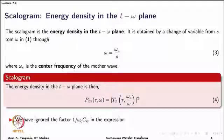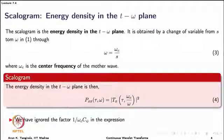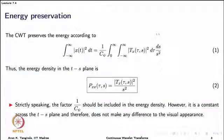To do this conversion we go back to our scale-to-frequency expression. We know the pseudo-frequency relation omega ≈ omega_c / s, where omega_c is the center of the passband frequency of the wavelet. You could replace omega_c with another reference frequency such as a peak frequency, but it is usually the center frequency. We then bring in this relation between omega and s back into equation 1 — not directly substituting into equation 2, but first rewriting equation 1 in terms of tau and frequency.